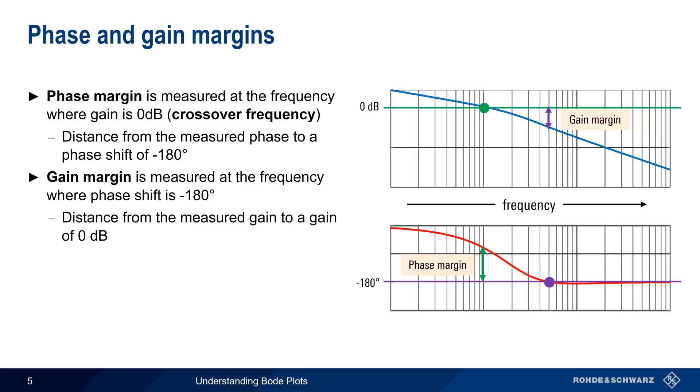These values, 0 dB and minus 180 degrees, are important because system instability occurs if these two values meet.